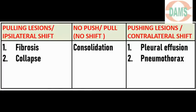For clinical examination, this is important. Pulling lesions — where the trachea is pulled towards the same side of disease — include fibrosis and collapse. Pushing lesions — where the trachea is pushed to the opposite side of disease — include pleural effusion and pneumothorax. Diseases with no significant change in tracheal position include consolidation.